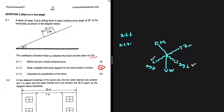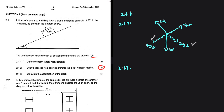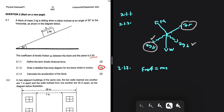For 2.1.3, calculate the acceleration of the block. F_net equals ma — that's the standard starting point. Our object is moving parallel to the incline, so we're only interested in forces acting parallel to it: fg parallel and the frictional force. The force pulling the object down the incline is fg parallel, and the force opposing it is the frictional force. So: fg parallel minus frictional force equals ma.